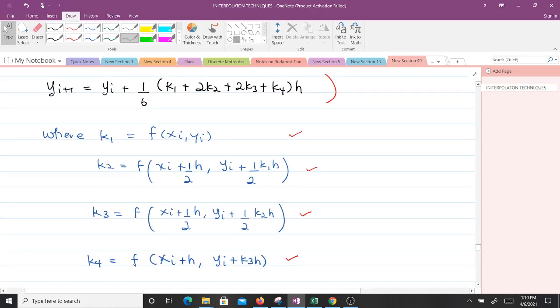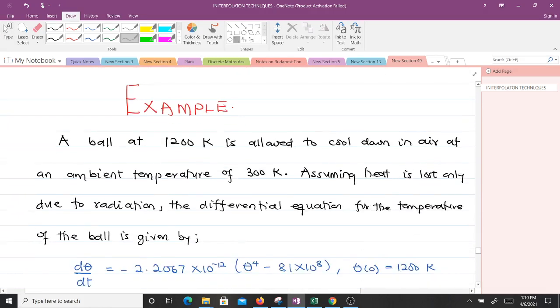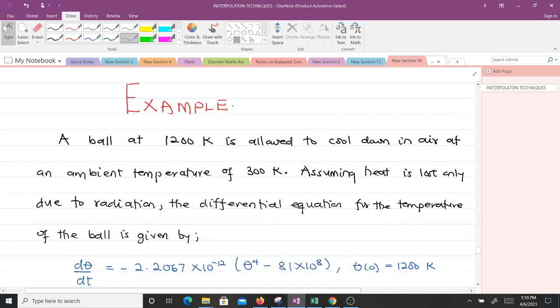Let's implement that to solve a question. The question says a ball at 1200 Kelvin is allowed to cool down in air at an ambient temperature of 300 Kelvin. Assuming heat is lost only due to radiation, the differential equation for the temperature of the ball is given by what we can see here.